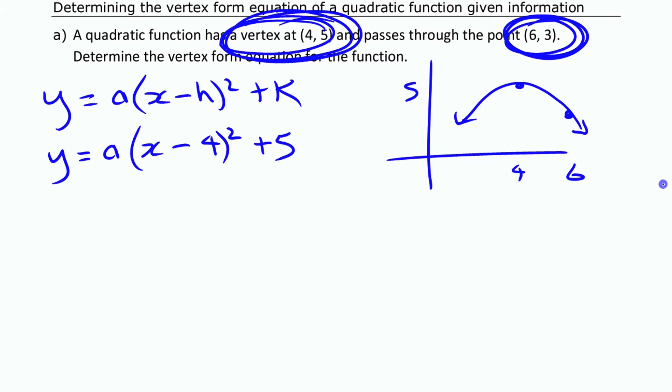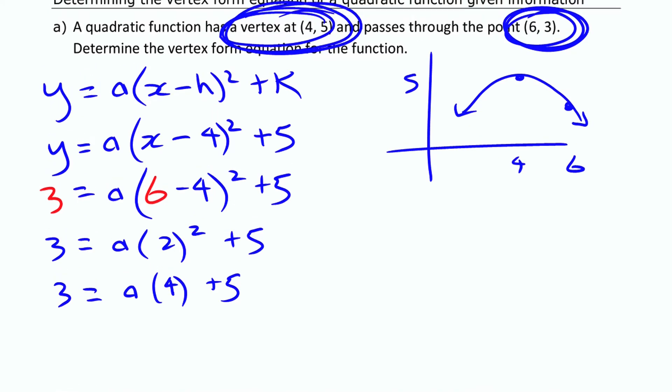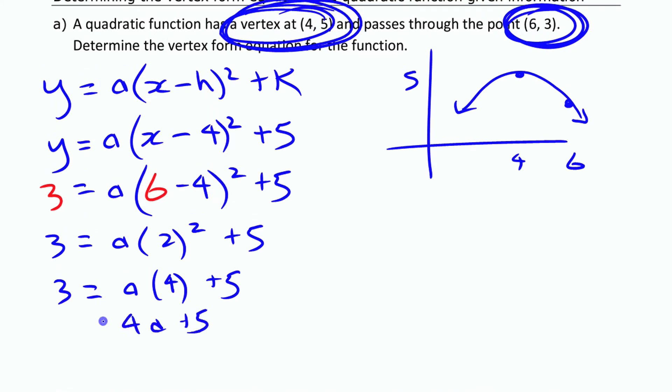Now, if I substitute in 6, 3 for x and y, so in other words, I am substituting in 6 for x and 3 for y. So if I work this all out now and just evaluate some of the stuff over here and then solve my equation for this, I'll know my a value. So I'll do that right now. I have 2 squared there. If I actually square that, that's a 4. Now, it's simpler to write that as 4a plus 5 equals 3.